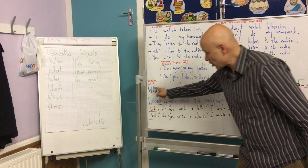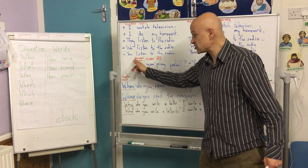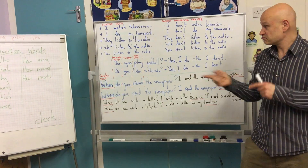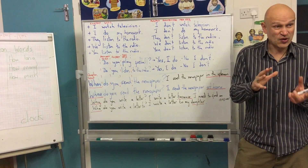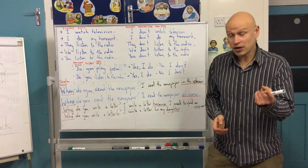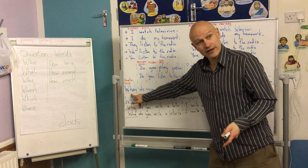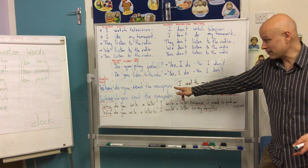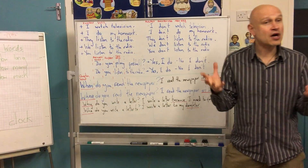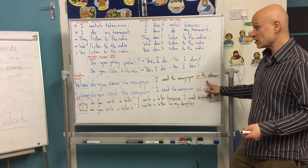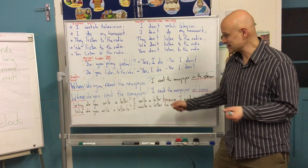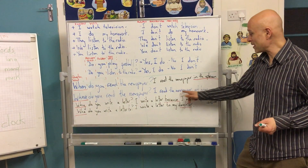And then we used question words in front of these questions. So instead of a little question like 'Do you play football? Yes, I do. No, I don't,' we were saying, 'I read the newspaper.' And then you asked, 'When do you read the newspaper?' 'I read the newspaper in the afternoon.' When — about time. And then 'Where do you read the newspaper?' About a place. And you said, 'I read the newspaper at home.'